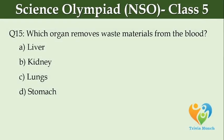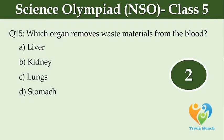Which organ removes waste materials from the blood? Option A, liver. Option B, kidney. Option C, lungs. Option D, stomach.